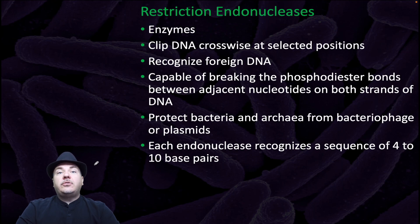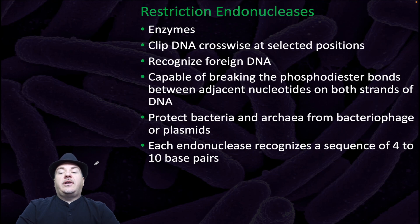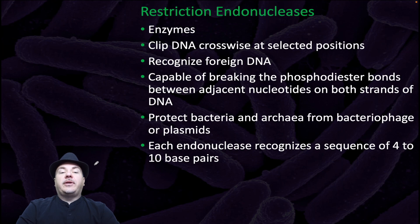Restriction endonucleases are enzymes which clip DNA crosswise at selected positions. They recognize foreign DNA. They're capable of breaking the phosphodiester bonds between adjacent nucleotides on both strands of DNA. They protect bacteria and archaea from bacteriophage or plasmids. Each endonuclease recognizes a sequence of four to ten base pairs.